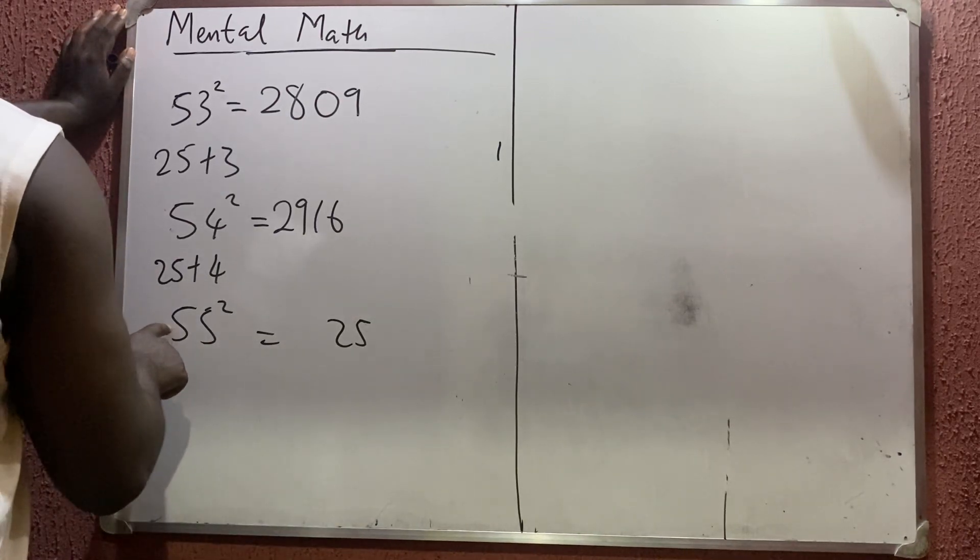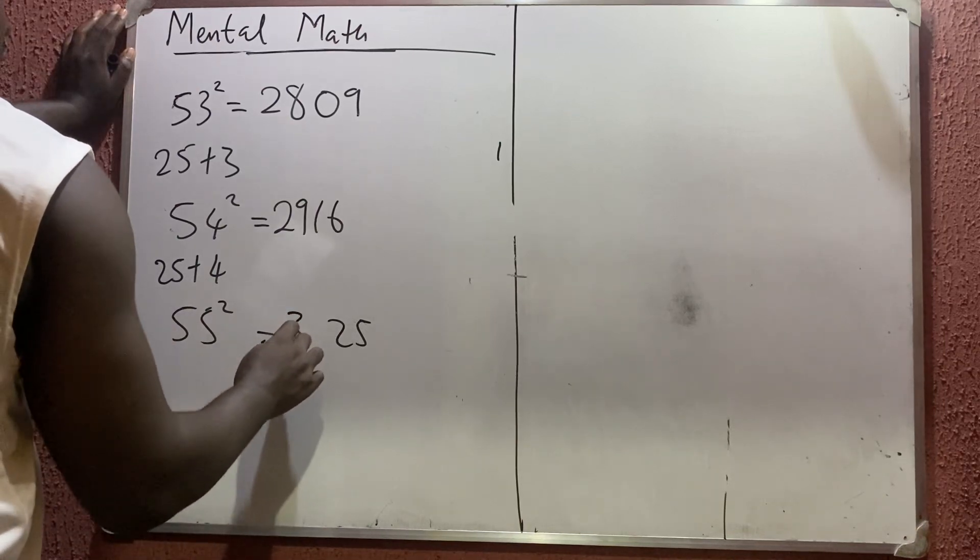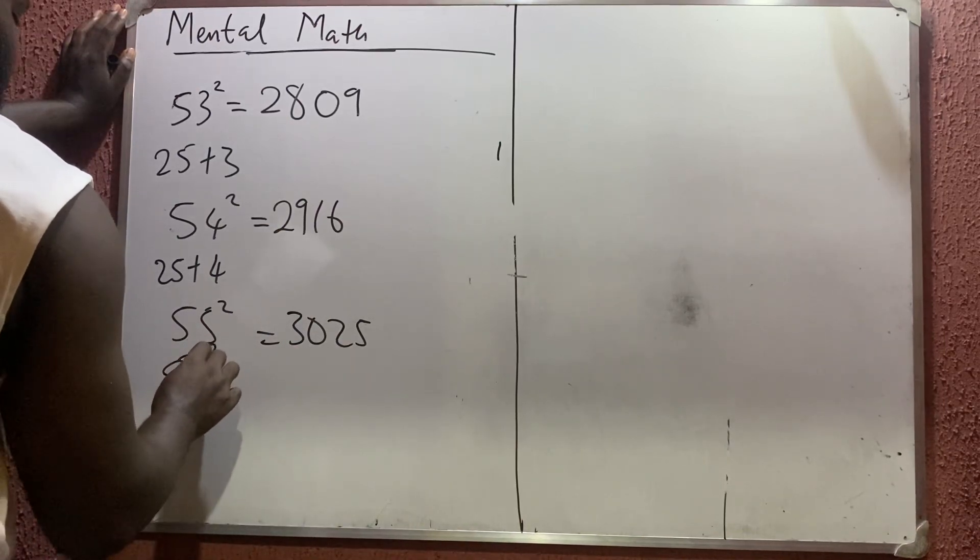56 squared. Let's go again. 6² is 36. 5² is 25. 25 plus 6 gives you 31.